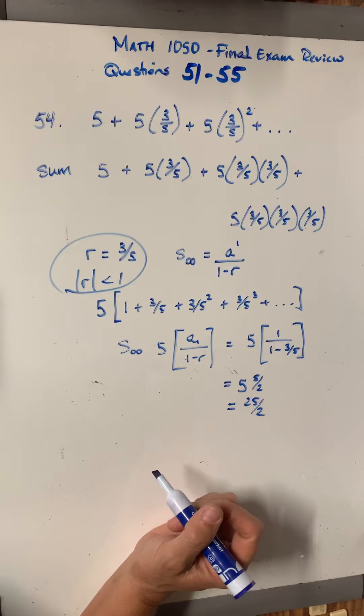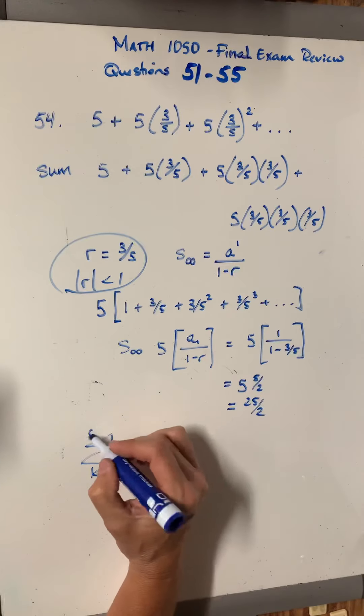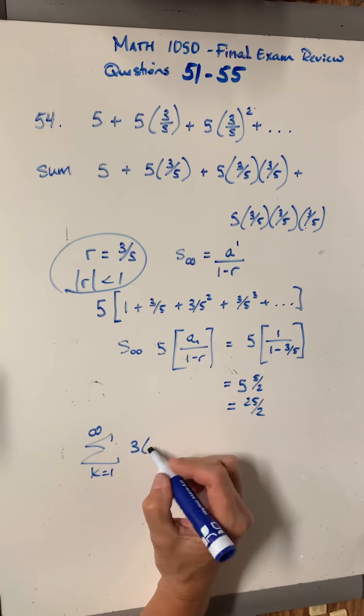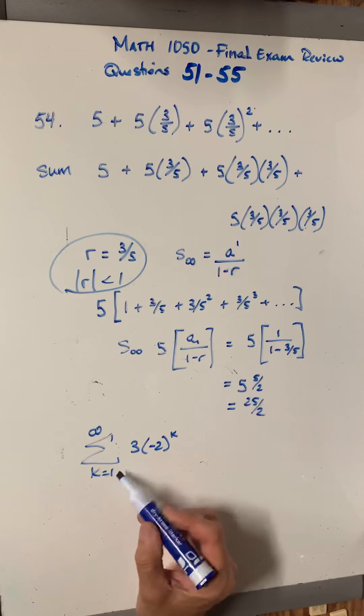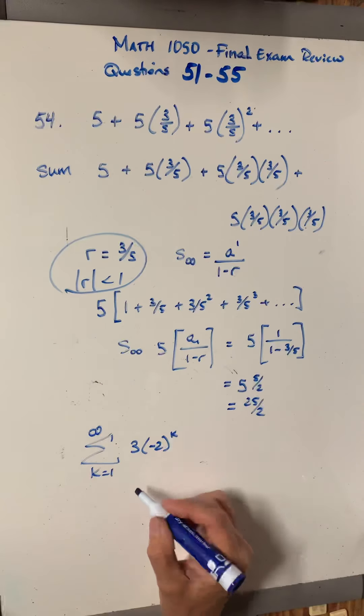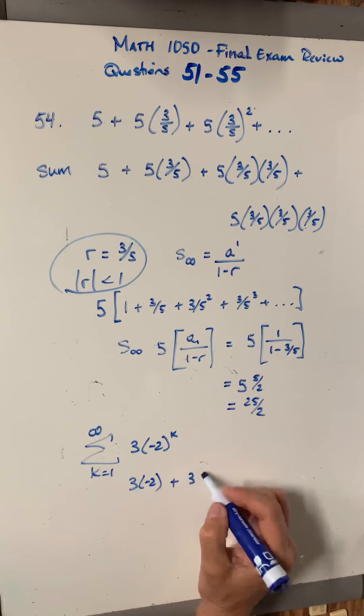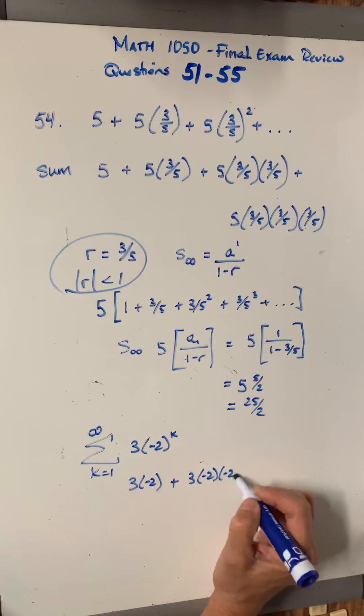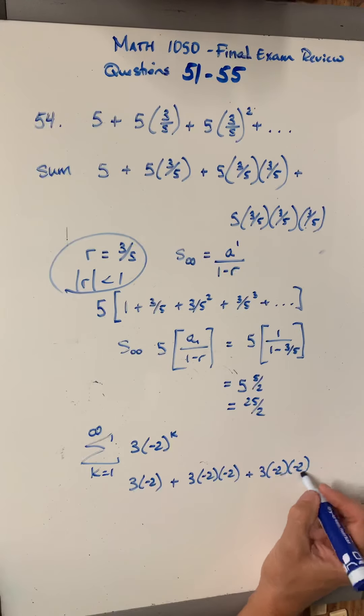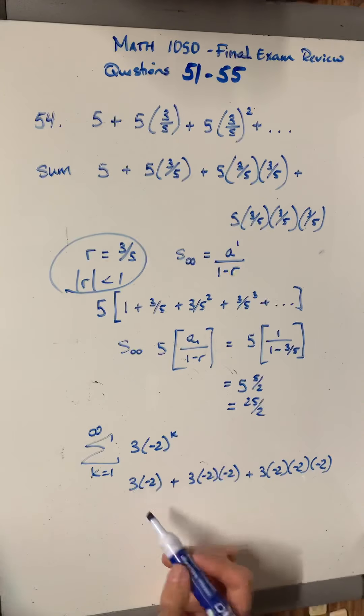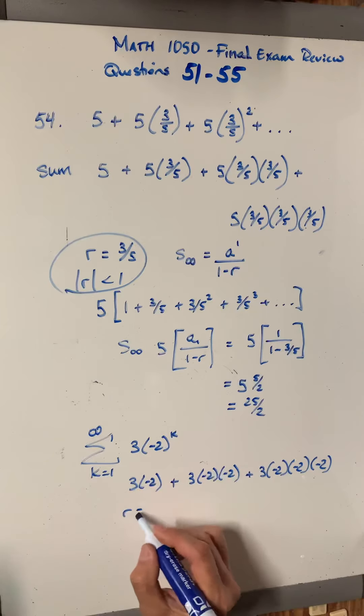So the second part of this problem gives me the sum as k starts at 1, goes from 1 to infinity of 3 times negative 2 to the k. Well, if you don't know what the common ratio is here, let's list a few terms. So the first term, when k is 1, we get 3 times negative 2. Plus, when k is 2, we get 3 times negative 2 squared, which is negative 2 times negative 2. Plus, when k is 3, I get 3 times negative 2, negative 2, negative 2. So do you see what the common ratio is? Each time, I'm multiplying the previous term by another negative 2. So my r is negative 2.